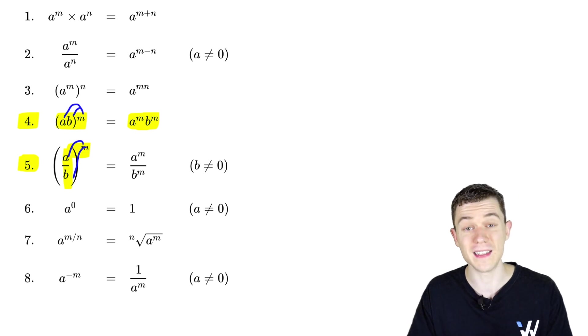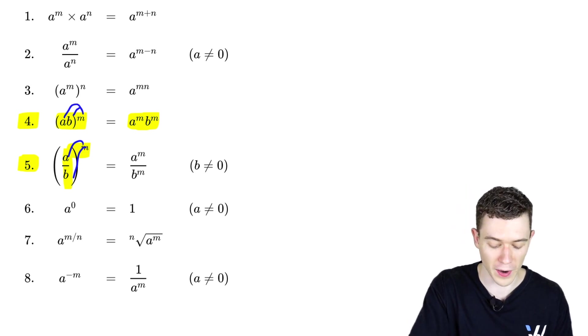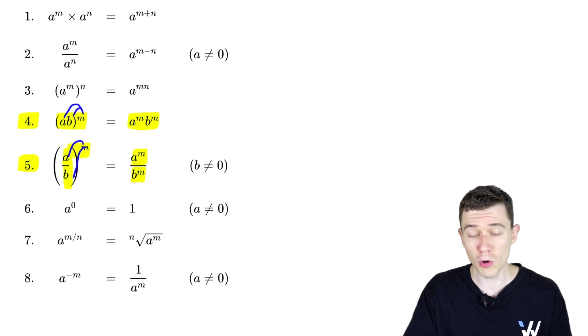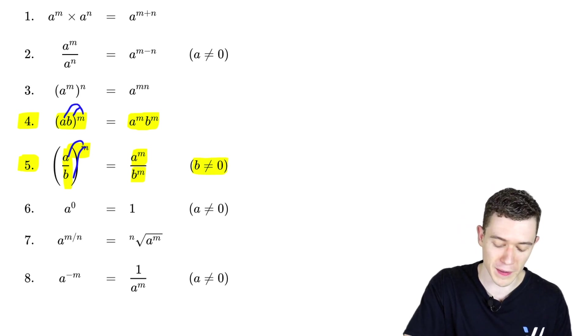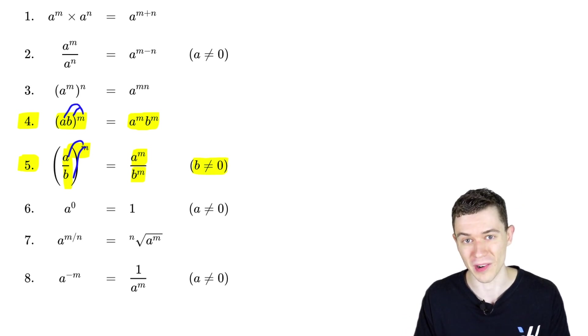So in number four, a b to the m is the same as a to the m times b to the m. In number five, it's a to the m over b to the m. Of course, b cannot be zero — we can't divide by zero.